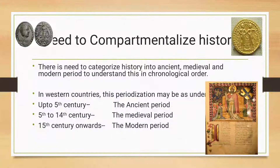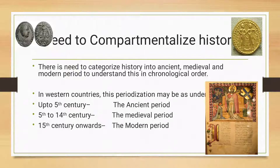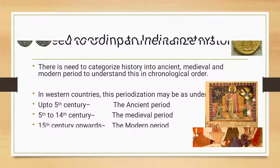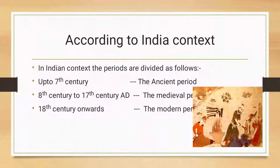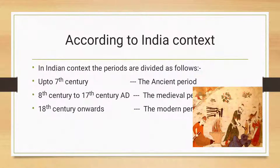In Western countries: up to the 5th century AD was the ancient period; 5th to 14th century AD was the medieval period; and 15th century onwards was the modern period. When we talk about Indian periodization, in the Indian context: up to the 7th century AD was the ancient period; from the 8th to 17th century AD was the medieval period; and 18th century onwards was the modern period. When we compare both the Western and Indian periodizations, there is a significant difference in timing. The periodization is categorized on the basis of changes which occurred in Western countries and India.